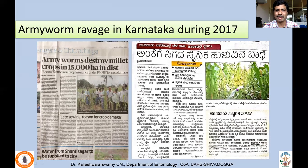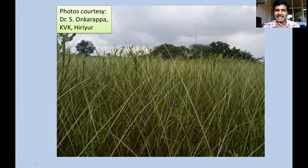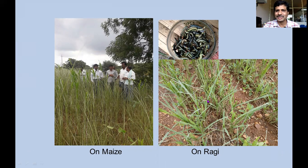Very meagre population is maintained in other years. In Giniyur, one place in Karnataka, there was a very huge incidence causing complete defoliation in maize and even ragi. Farmers can literally collect thousands of larvae from their fields, leading to very high defoliation.